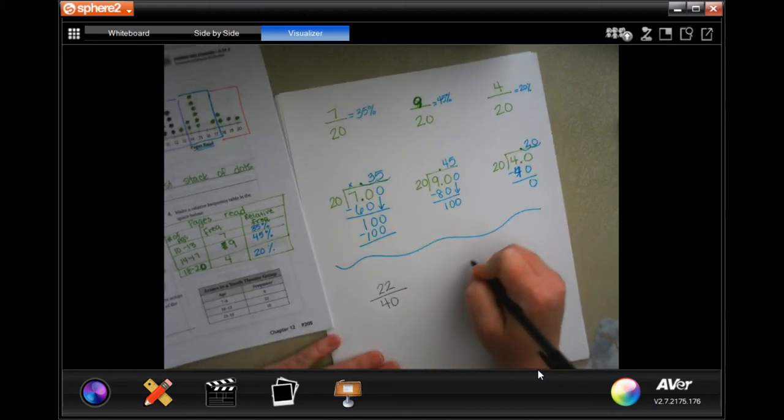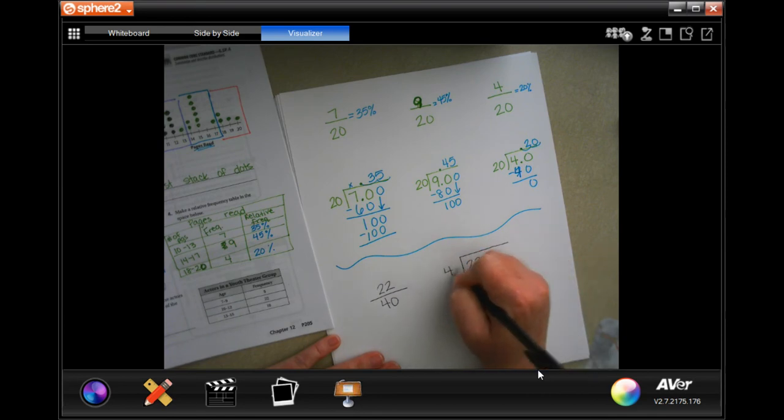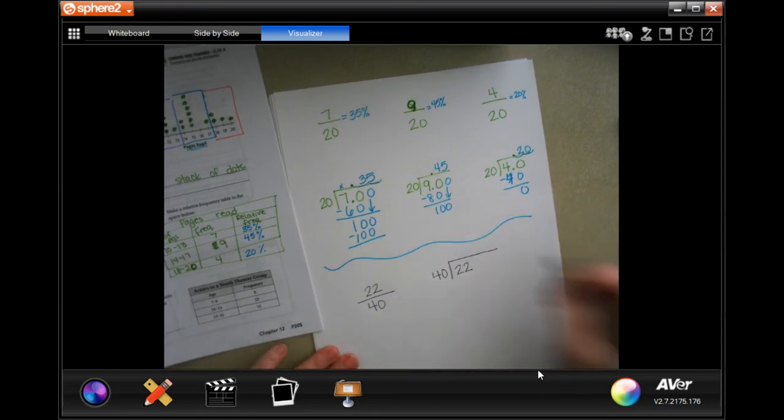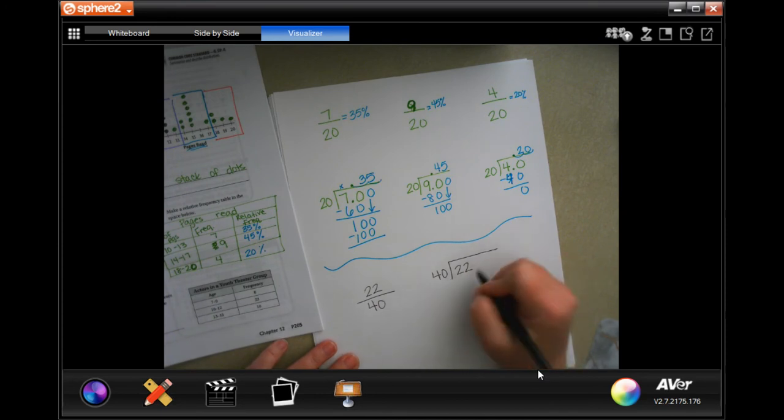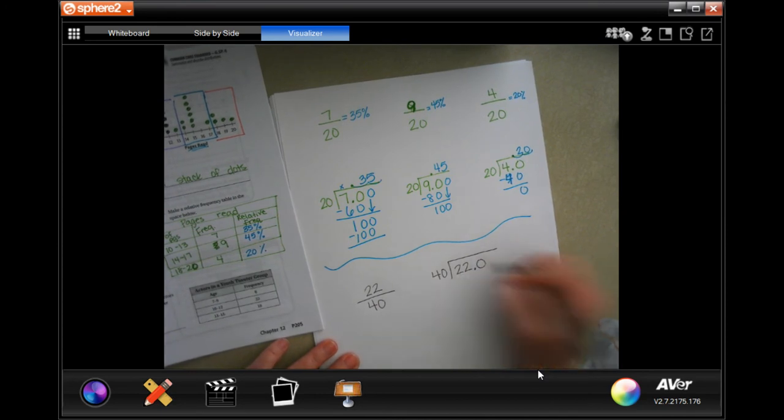So now I have 22 inside the box, 40 outside the box. Obviously, 40 is not going to go into 22. I need to add a zero.